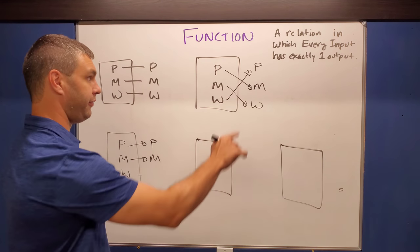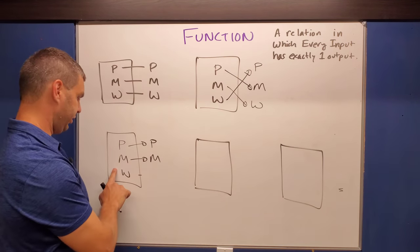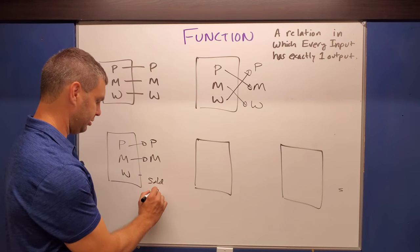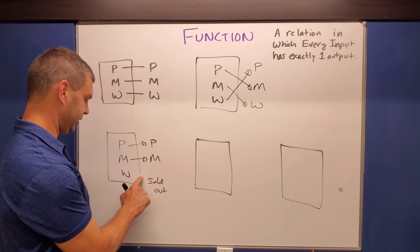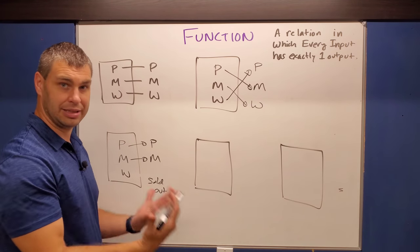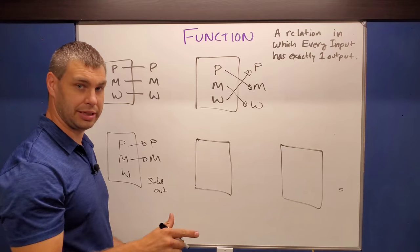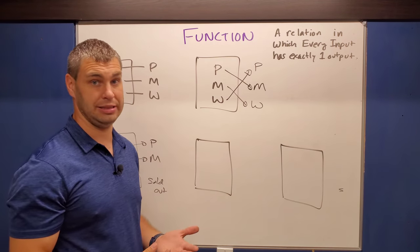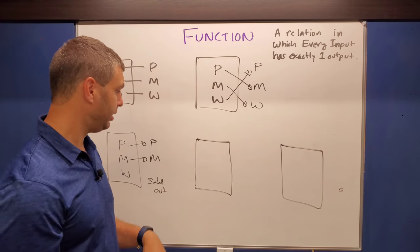Now back to my definition. Does every input have exactly one output? Well, since this one is sold out, no, it doesn't. Right. There is no line coming out from this one because it does not work. That's when you hit the button and the machine will say sold out. So when a machine is sold out, that technically is not going to be a function for that vending machine.